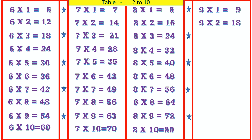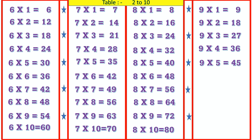9 3's are 27, 9 4's are 36, 9 5's are 45, 9 6's are 54, 9 7's are 63.